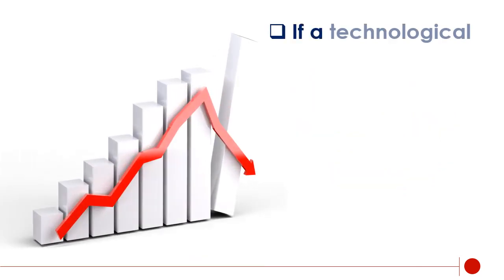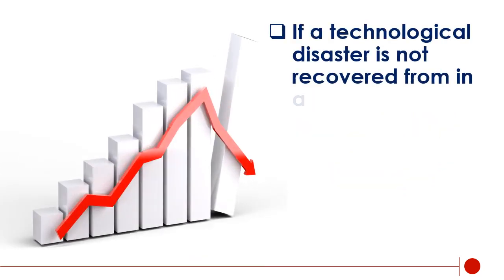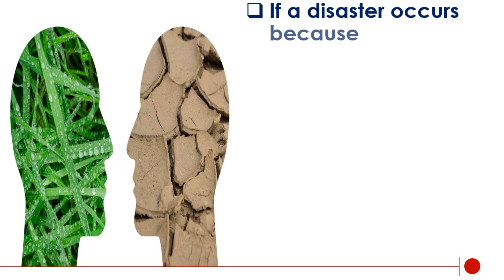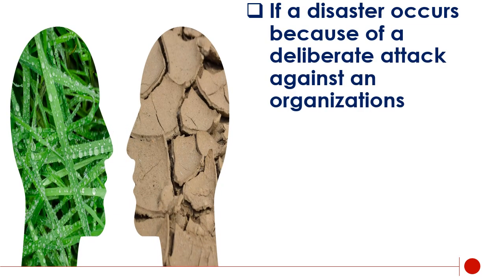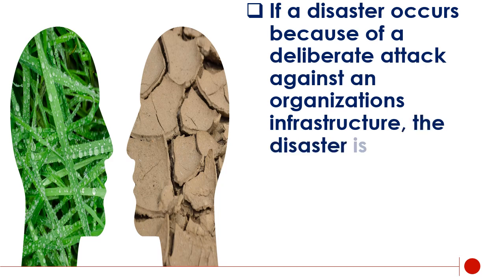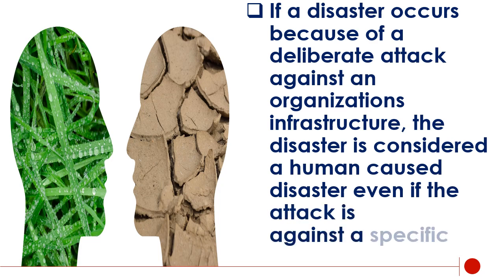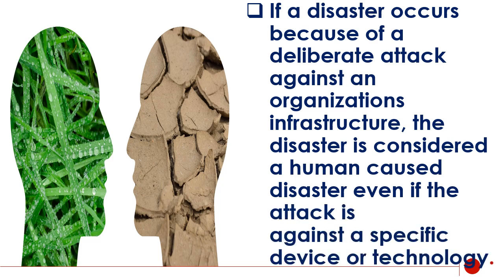If a technological disaster is not recovered from in a timely manner, an organization might suffer a financial collapse. If a disaster occurs because of a deliberate attack against an organization's infrastructure, the disaster is considered a human-caused disaster even if the attack is against a specific device or technology. In the past, all technological disasters were actually considered human-caused disasters because technological disasters are usually due to human error or negligence.